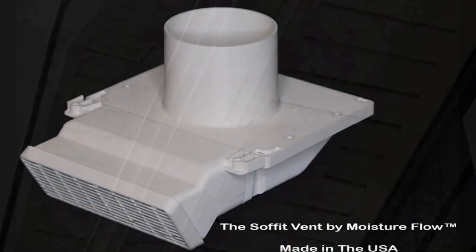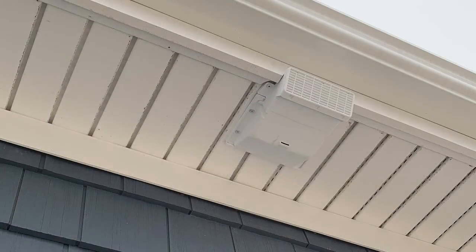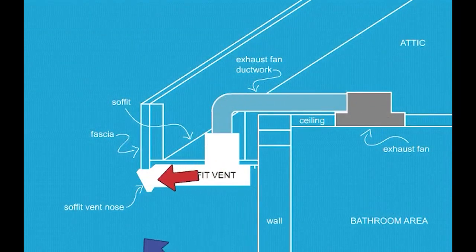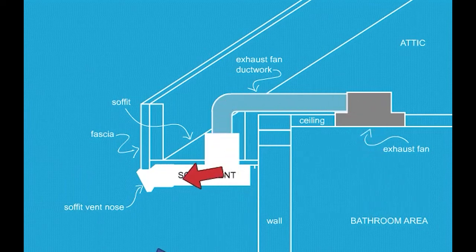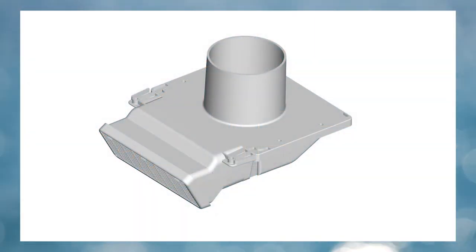Introducing the Soffit Vent by Moisture Flow — the only patented and proven solution to properly vent the termination of a bathroom exhaust fan through the soffit. The soffit vent's unique patented design allows hot, moist air from the bathroom to be exhausted through the soffit without worry that it will mix with the cool air intake for the attic. This eliminates the danger of moisture and mold forming in the attic from improperly used exhaust vents.